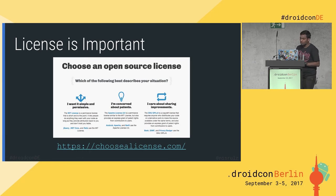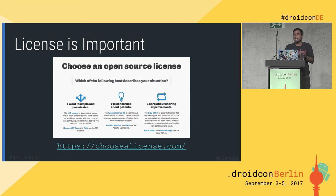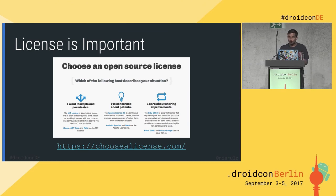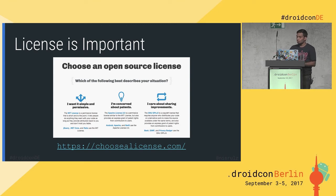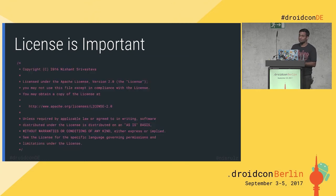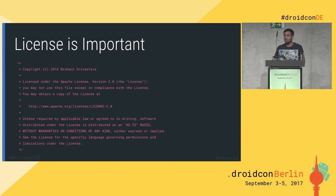License is really important and most people skip this. If you do not have a license, in legal terms it means you own the code and no one is going to contribute back to it. If you don't mention how you want others to contribute, people will think it's proprietary and won't use it. Add at least some license — the best options are MIT or Apache 2.0. I like to add a header in each file with a basic summary of the license, so when an app developer opens the code they immediately understand the terms and how to contribute.